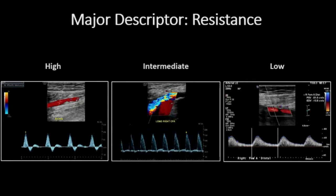The final major descriptor is resistance. Broadly speaking, arteries can demonstrate high, intermediate, or low resistance patterns. The vascular bed being supplied by the interrogated artery is a major determinant of the waveform appearance. Arteries which supply resting skeletal muscle will normally demonstrate a high resistance waveform. A dense arteriolar bed in the skeletal muscle causes relative impedance of forward blood flow, thus causing high resistance upstream.